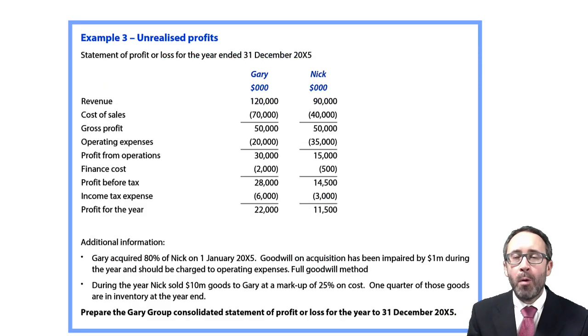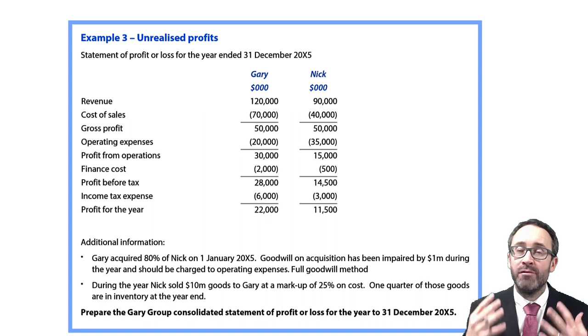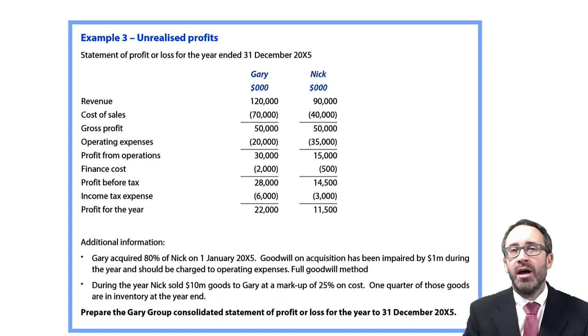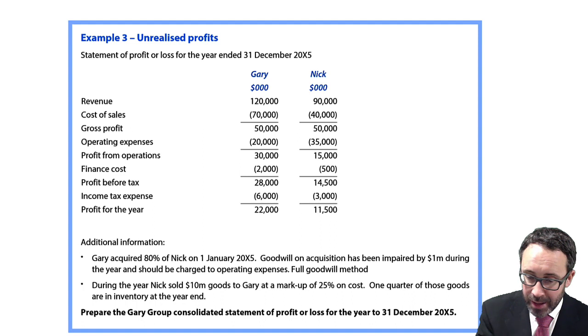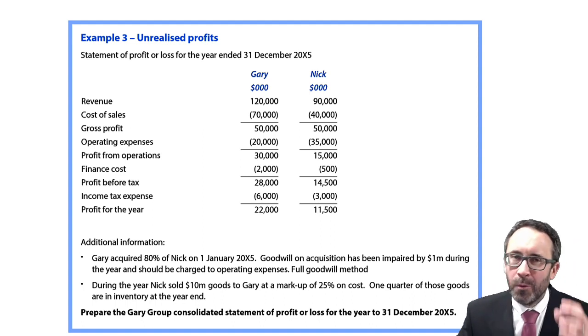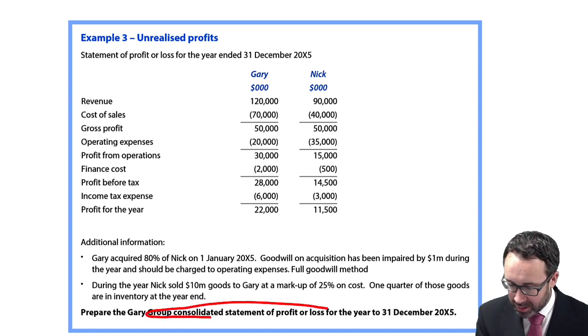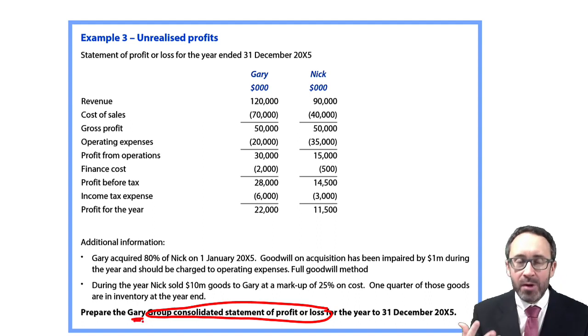This is a lecture from Open Tuition. We're going to look at an example that builds upon what we've already looked at with those adjustments in the previous video. We're going to pull it all together, looking at impairments and where they appear within the group statement of profit or loss, and also intra-group sales and how to eliminate those intra-group sales and any associated provision for unrealized profit.